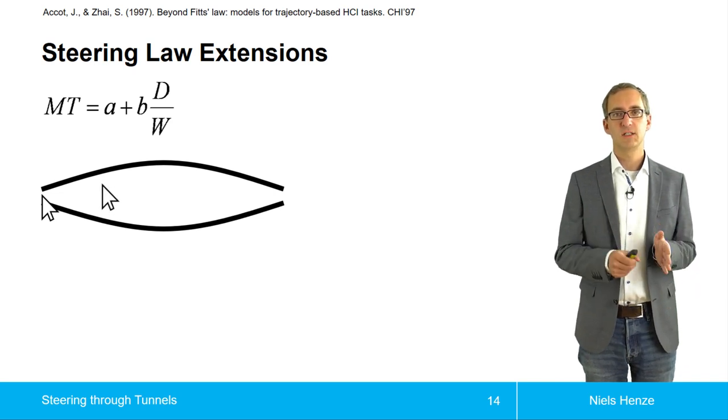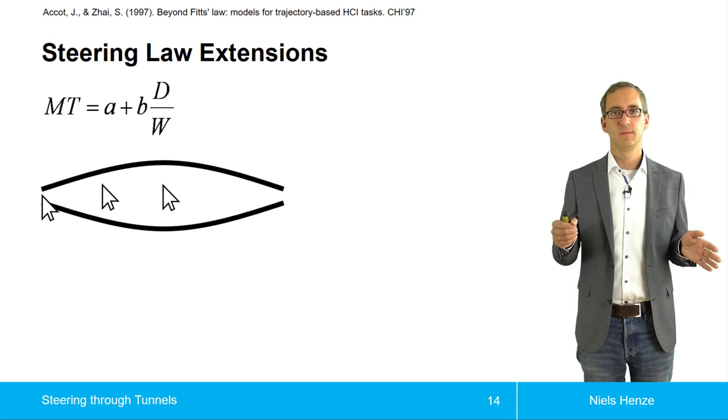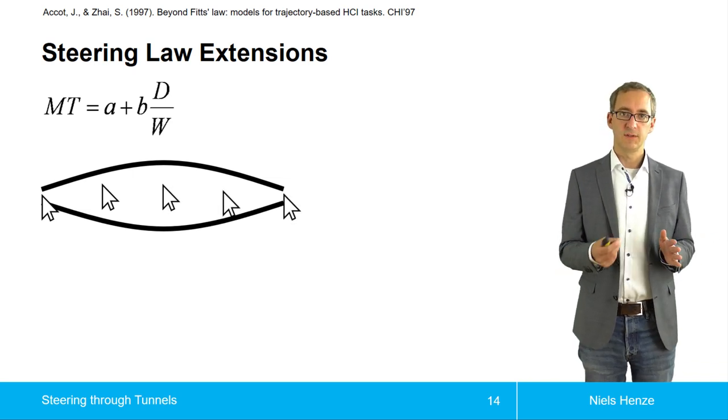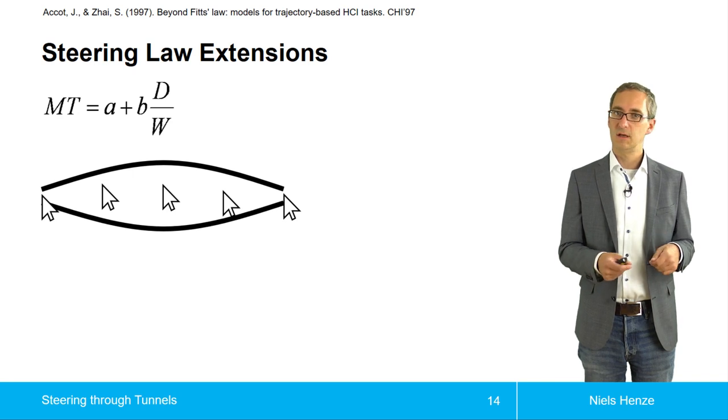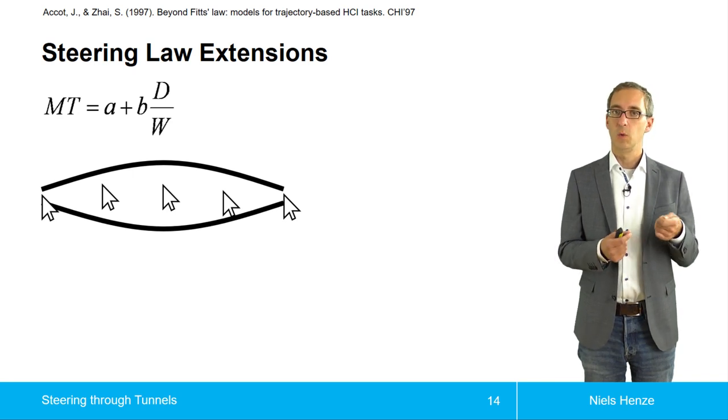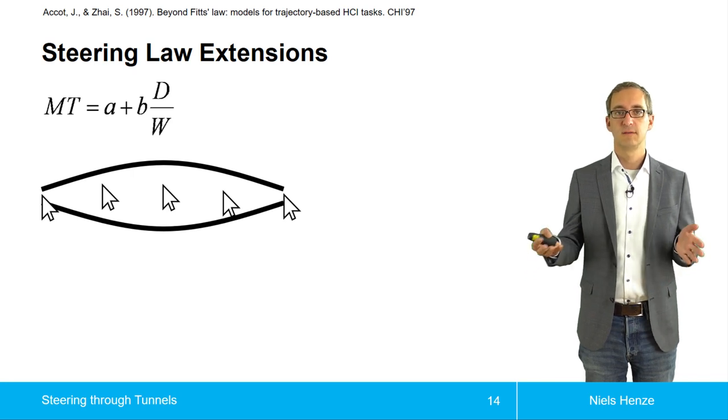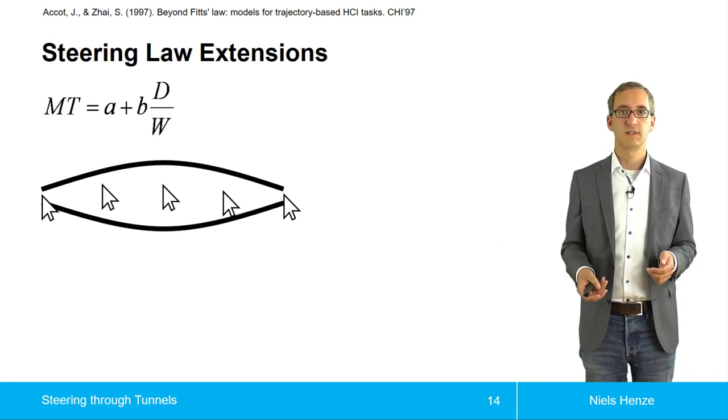And what we could do is we could think about each position while the mouse pointer moves through this tunnel. And for each of these positions, we can of course figure out how wide the tunnel is at this position, and how far is the target or the exit of the tunnel away.